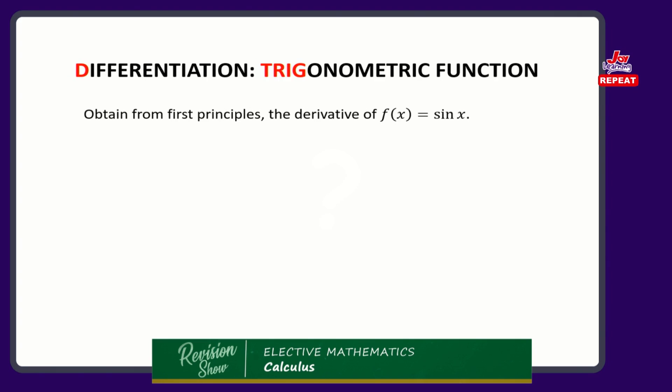We know that the derivative of sin x is cosine x. The x is in radians, not in degrees — we can measure angles in radians or degrees, and this is measured in radians. From first principles, what do we do? We say: what happens to your parents' income if it increases slightly? What happens to your pocket money? If that function is called y, then y will be equal to sin x. That's our first equation.